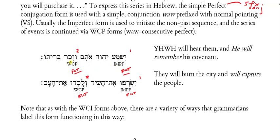'And he will remember his covenant.' Now if before today you had walked into class and I had written this on the board, you would say 'vav-and, zakar is perfect and past, so and he remembered.' But now you know that in sequence with an imperfect, a perfect could be a WCP form indicating non-past action — future. Whatever the nuances of the imperfect that comes first, the WCP forms will usually carry the same nuance. So if it's just future, then this will be future: 'Yahweh will hear and he will remember.'